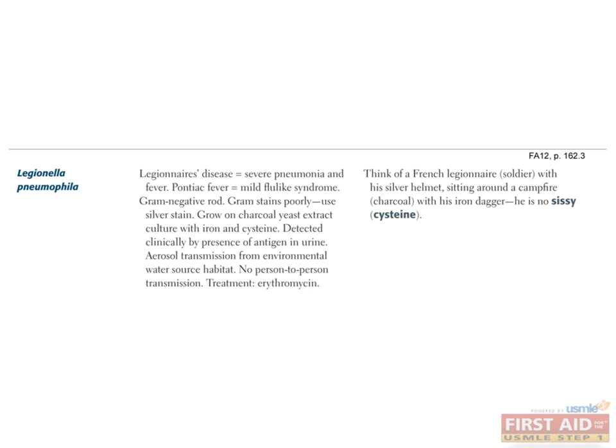Legionella pneumophila is poorly gram-stained and requires a special silver stain to be seen. It is the bacterium responsible for Legionnaires' disease, so named after its discovery at an American Legion convention held at a hotel in Philadelphia in 1976. The organism was isolated from the air conditioning system, and it is understood that the microbe prefers to inhabit natural and artificial sources of water. Transmission occurs via inhalation of infectious aerosols. A mild form of Legionellosis is called Pontiac fever, presenting with influenza-like symptoms such as fever, chills, myalgias, and resolution within about a week without treatment.